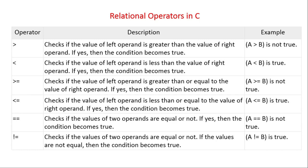If yes, the condition becomes true and otherwise false. The next operator is greater than or equal to (>=), which checks if the value of the left operand is greater than or equal to the value of the right operand. If yes, then the condition becomes true.